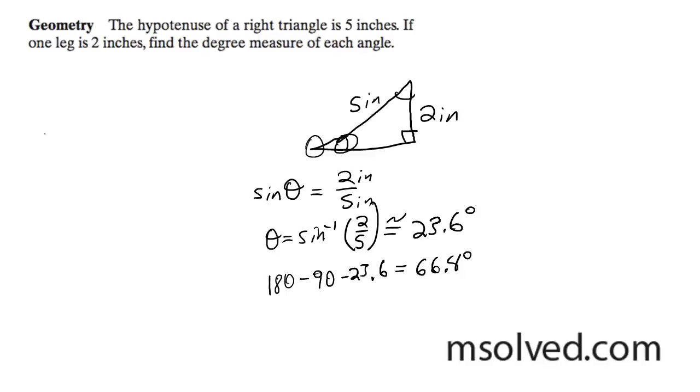So your angles are theta one, theta two, 23.6 degrees and 66.4 degrees. That's it.